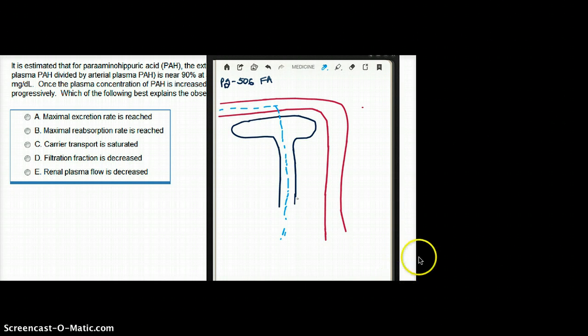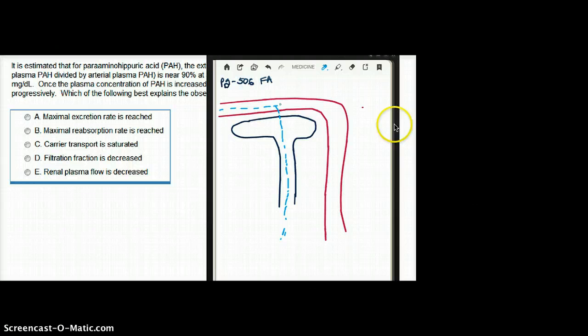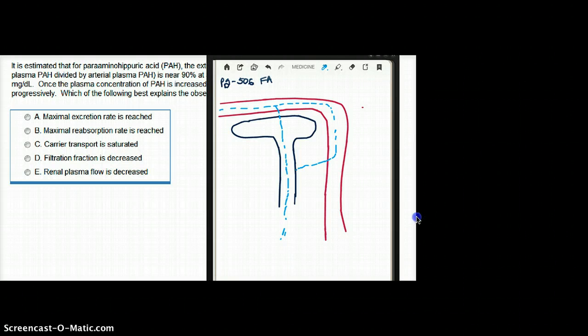All of it goes in the urine. And the rest of the PAH, as it travels down the blood vessel, it's going to come and join all of it inside the nephron. See, none of it is going back.